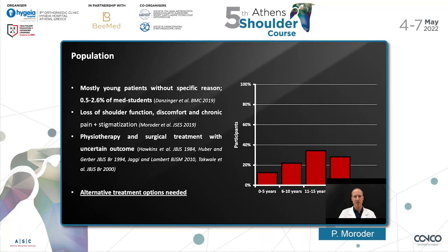Now, who is affected by this condition? We saw that 0.5 to 2.6% of our medical students are able to dislocate the shoulder if they want to, so it seems to be quite frequent among a young patient population. Their age of onset is typically around 11 to 15 years. Patients are characterized by loss of shoulder function, discomfort, chronic pain and stigmatization if they have a non-controllable condition. Physiotherapy and surgical treatment are considered potential treatment options; however, they are associated with uncertain outcome.